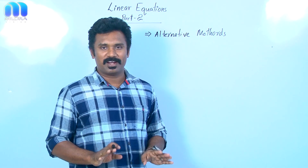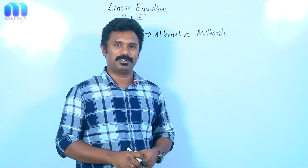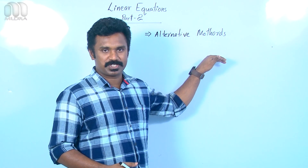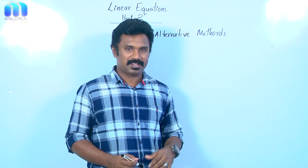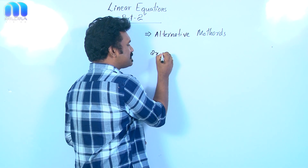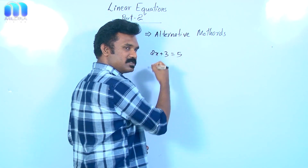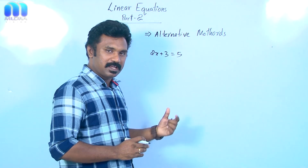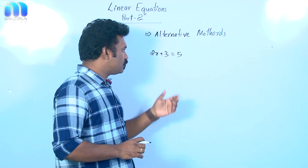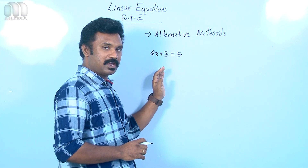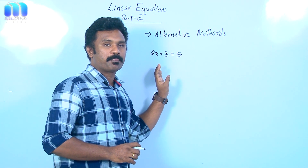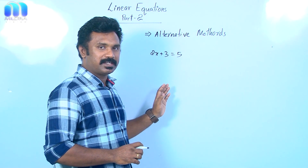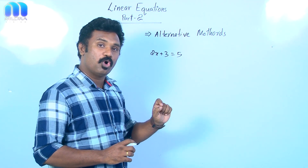I hope you all understood how to solve a linear equation in one variable. To make this procedure easier, we can find an alternative method to solve a linear equation. Let us see an example: 2x plus 3 equal to 5. We need to find the value of x. To solve such linear equations in one variable, what we need to do is shift the other terms — x should stay here — and other terms should be transferred to the other side of the equation.